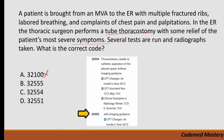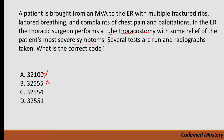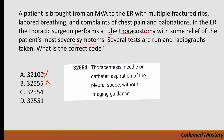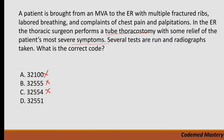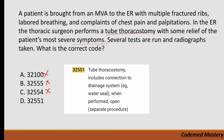Option B, 32555, is for thoracentesis needle or catheter aspiration of pleural space with imaging guidance, but the question does not mention thoracentesis or imaging guidance, so we eliminate it. Option C, 32554, is for thoracentesis needle or catheter aspiration of pleural space without imaging guidance, but again, tube thoracostomy was performed, so we eliminate it. Coming to option D, 32551, that is for tube thoracostomy.